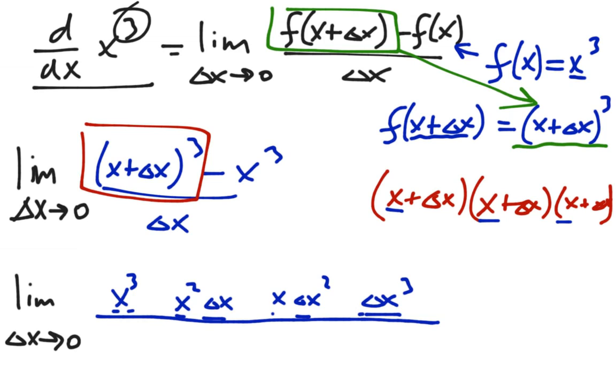And then the last part of that coefficient expansion is the actual numbers, the coefficients. And the third row of Pascal's triangle is 1, 3, 3, 1. So that's what we put in here. x cubed plus 3x squared delta x plus 3x delta x squared plus 1 delta x cubed. And don't forget, you have that minus x cubed at the end.